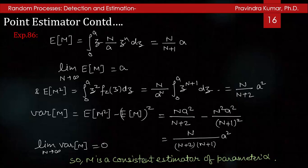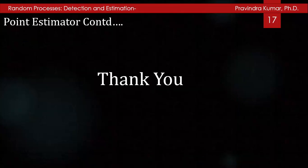So far in this lecture we have discussed about estimation, types of estimation, point estimator and its properties. This was the 25th lecture of the lecture series on Random Processes Detection and Estimation. In the next lecture we will discuss about minimum variance unbiased estimation (MVUE). Thanks for listening.